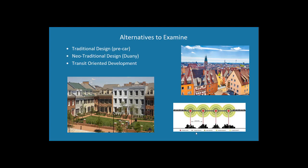We're going to examine some alternatives. We'll talk about traditional design — here's another European city with lots of natural density. Neotraditional design, the stuff that Duany is talking about — here's an example of denser developments organized around a courtyard. And then we'll talk about transit-oriented development: if Duany is talking about how you design a neighborhood, transit-oriented development is thinking about how you design a cluster of cities or small towns and connect them with some kind of efficient mass transit.